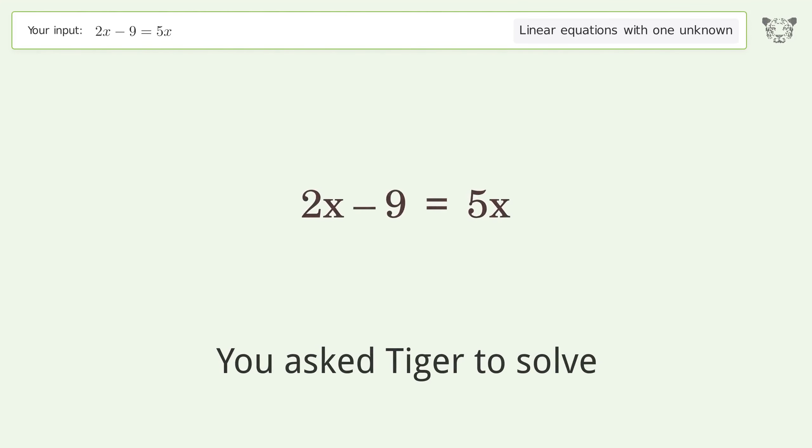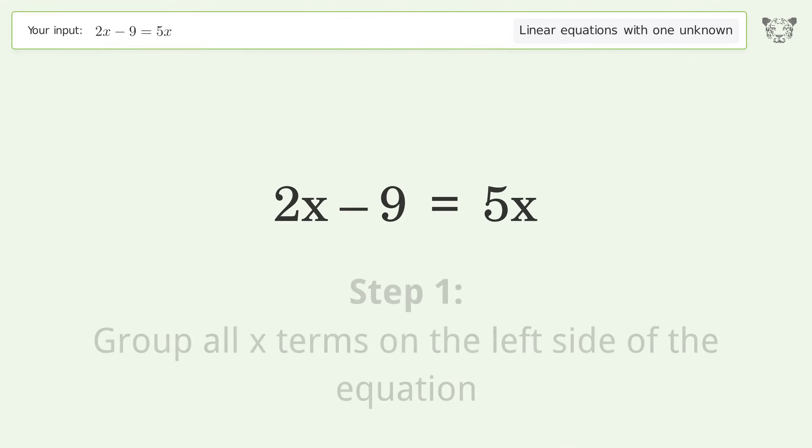You asked Tiger to solve this. It deals with linear equations with one unknown. The final result is x equals negative 3. Let's solve it step by step. Group all x terms on the left side of the equation.